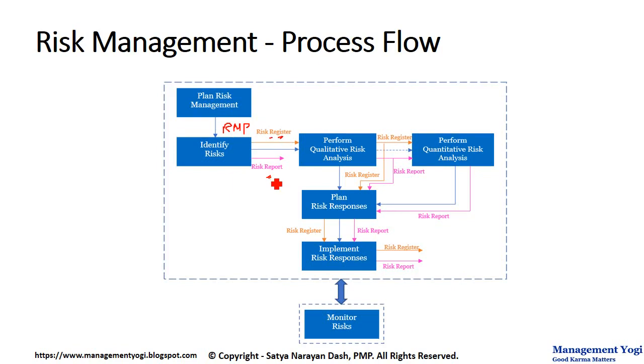Now, the blue lines that you are seeing are with respect to the processes. The orange ones are with respect to the risk register, and the pink ones are with respect to the risk report.